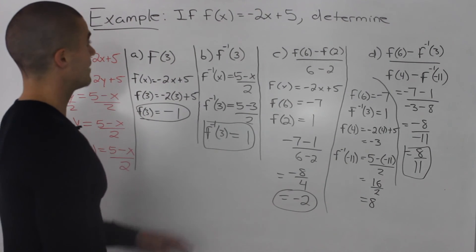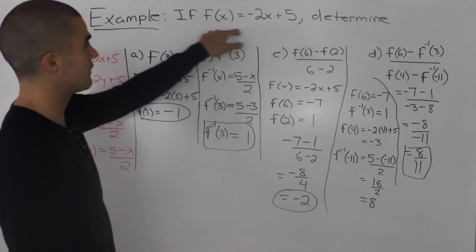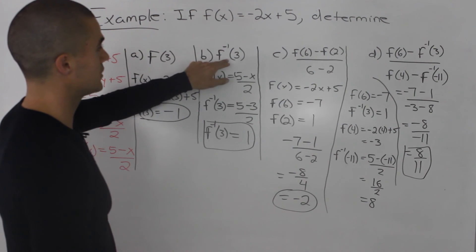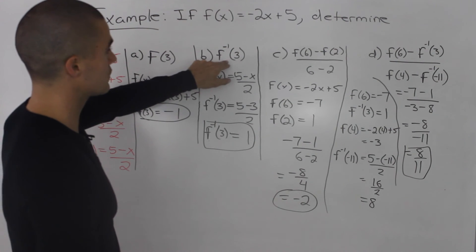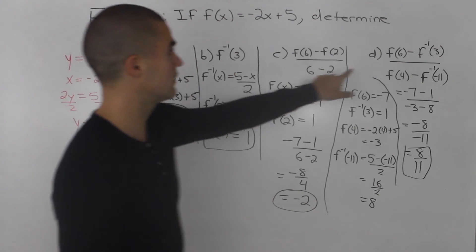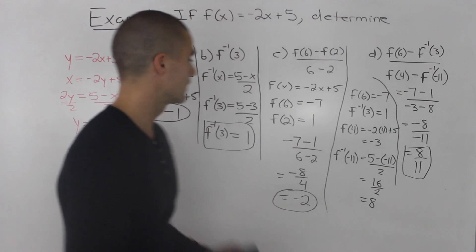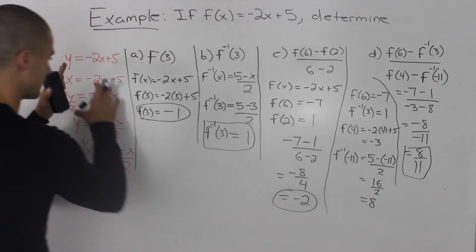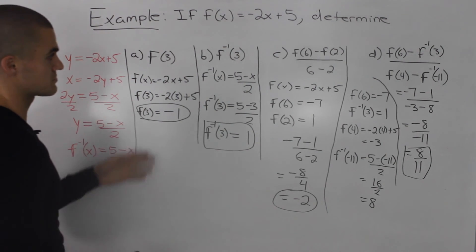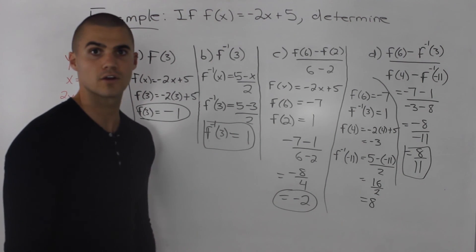As a recap: whenever you get a question like this where you're given f(x) and you know you'll be using the inverse — such as f⁻¹(3) or f⁻¹(negative 11) — first find the inverse equation, and then all you have to do is plug in the x values respectively to get your answers.